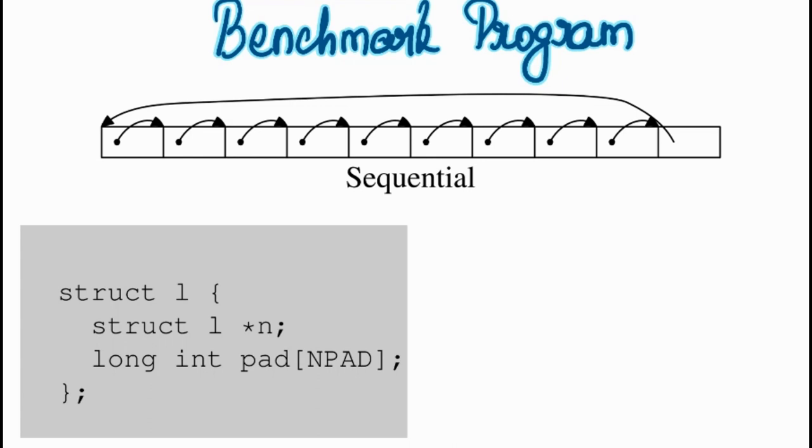And each node in the linked list is going to be in the type of struct L. Struct L is having two members, one is a pointer to itself, another is a long integer array. So as you can see, the size of the struct L is going to be varying in multiples of 8 bytes in a 64-bit machine.